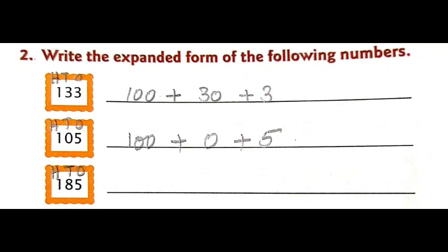Next, what is the next number we have? It is 105. First, write the place values above the number: ones, tens and hundreds. Remember, always write the place value from right to left. Above 5 write ones — that is O. Above 0 write tens — that is T. And above 1 write hundreds — that is H. So here we have 105. We have to start from the highest place value, which is 100. So, 100 plus 0 tens — 0 tens is nothing but 0 — plus 5 ones, that is 5. So 100 plus 0 plus 5. Similarly, you try the next one children.